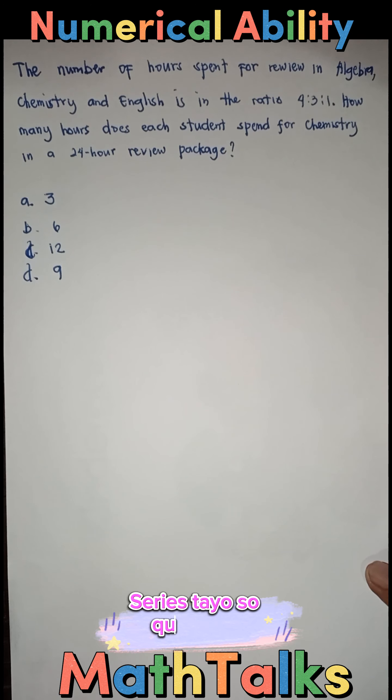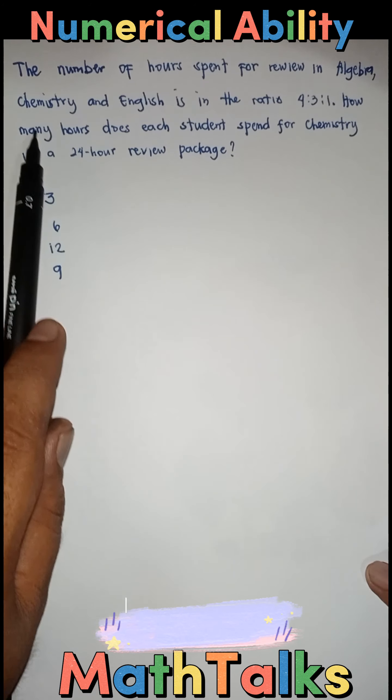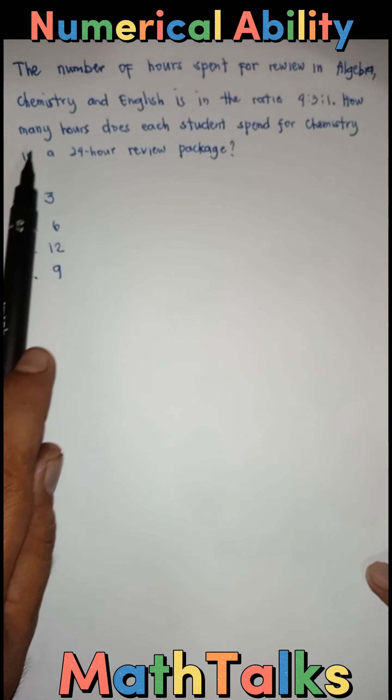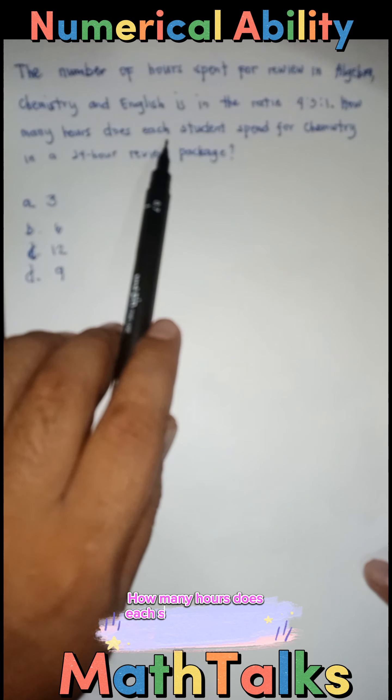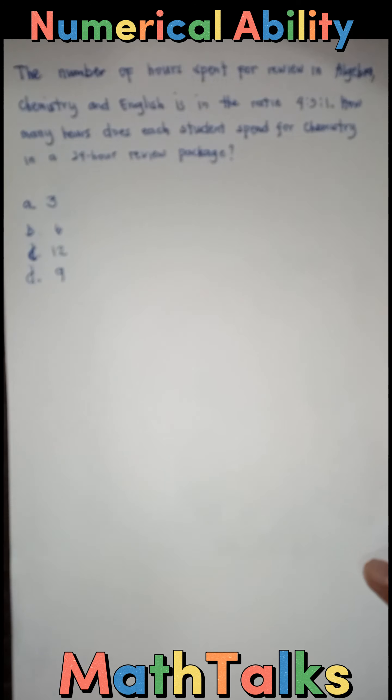Hi guys, Civil Service here is Taya Question. The number of hours spent for review in Algebra, Chemistry, and English is in the ratio of 4 is to 3 is to 1. How many hours does each student spend for Chemistry in a 24-hour review package?